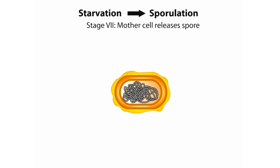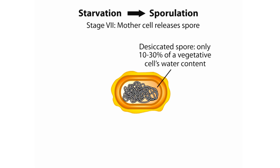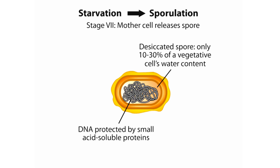Spores are resistant to many environmental stresses that would kill vegetative cells. The nature of this resistance is due in part to the spores having only 10–30% of a vegetative cell's water content, but spores also contain small acid-soluble proteins that bind and protect DNA from damage by ultraviolet light and various toxic chemicals. Fully mature spores can exist in soil for at least 50–100 years and have been known to last thousands of years.